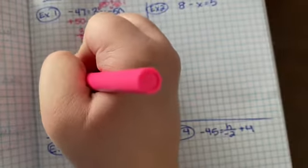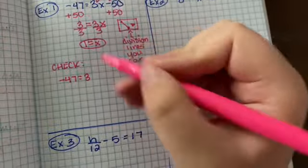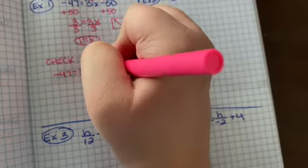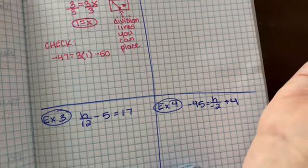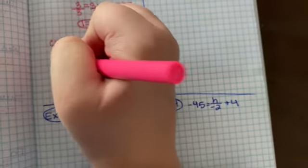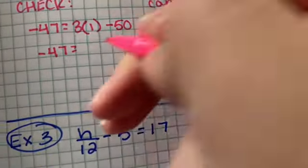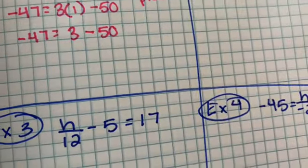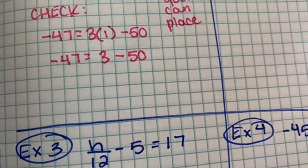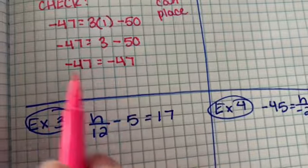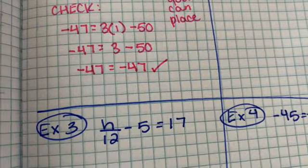So we have negative 47 equals 3 times 1, so don't forget that parentheses, minus 50. Go ahead and bring this down because we're not doing anything with it. 3 times 1 is just 3 minus 50, and you can use a variety of ways to solve this, but what you get is negative 47 equals negative 47. Obviously these are the same number, so the answer was correct.